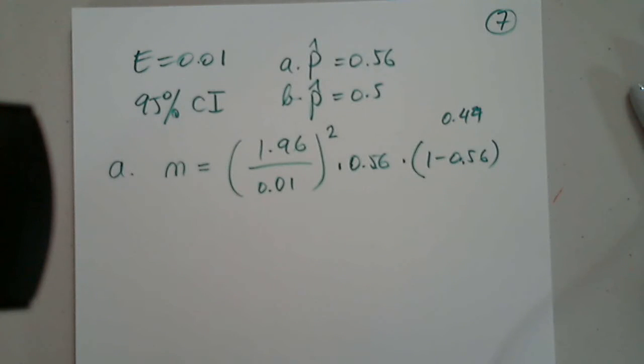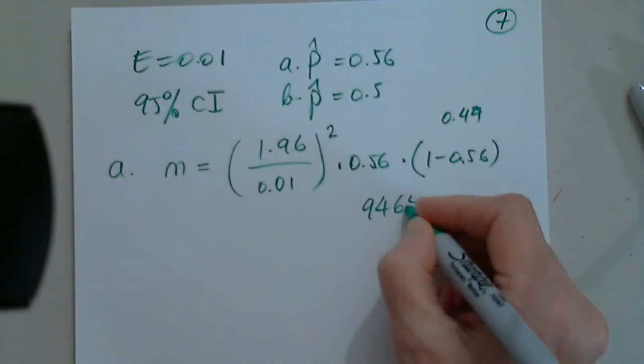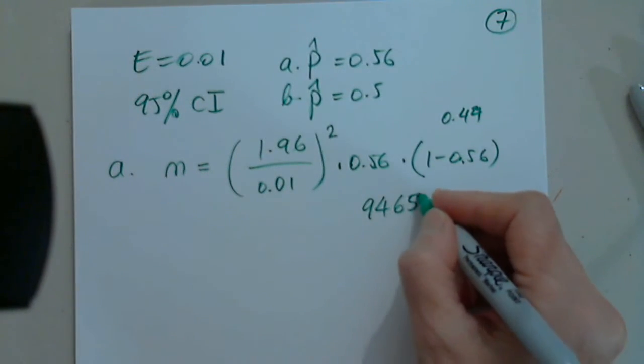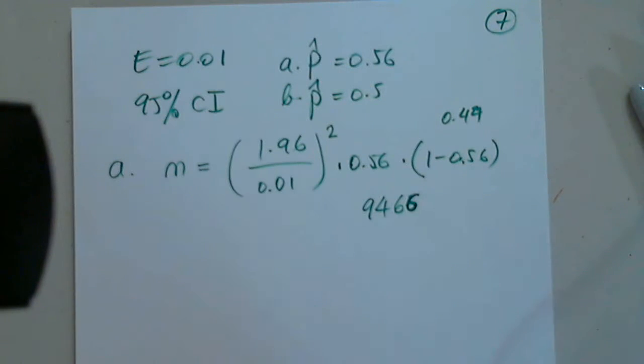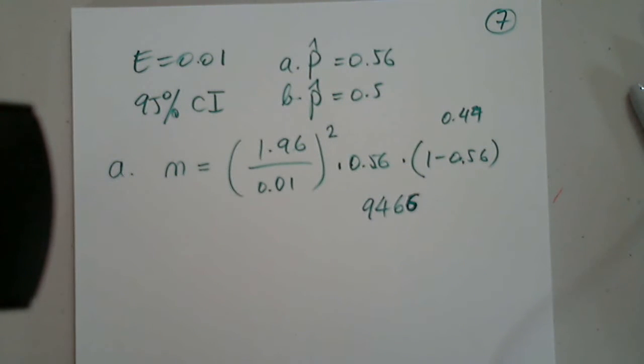And n. Answer? Yes. It's 9465.702. Right. So I have to round it up to 9466. So I will have to repeat the process when we do not have an estimate. So these two are equal, 0.5, 0.5.